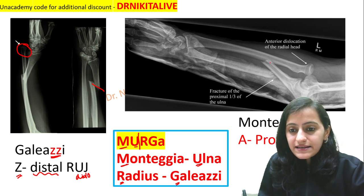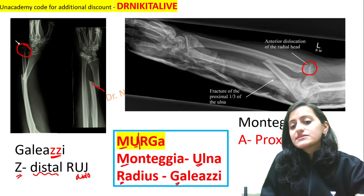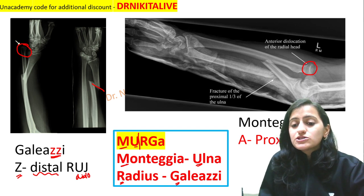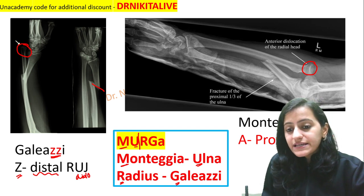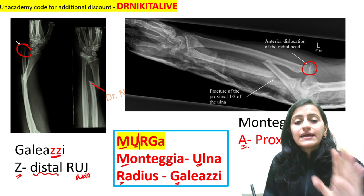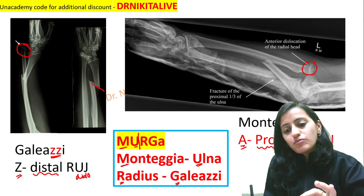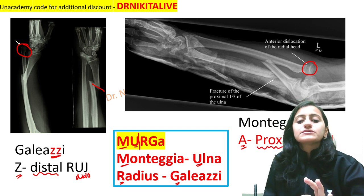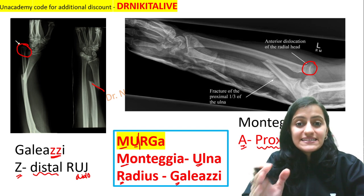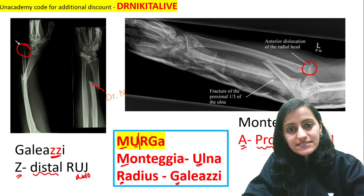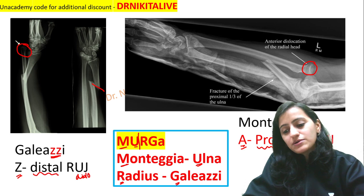Here, this is an ulnar fracture, and this is the head of the radius which is dislocated — so proximal radio-ulnar joint. Remember, Monteggia ends in A; A is the first letter, that is the proximal alphabet. So Monteggia ends in A, meaning it is proximal radio-ulnar joint dislocation. So remember: Galeazzi is distal and Monteggia A is proximal radio-ulnar joint.